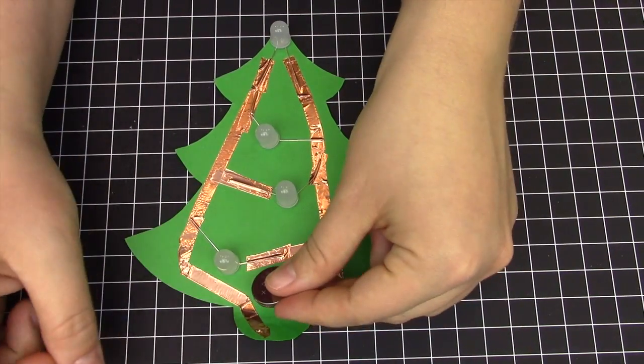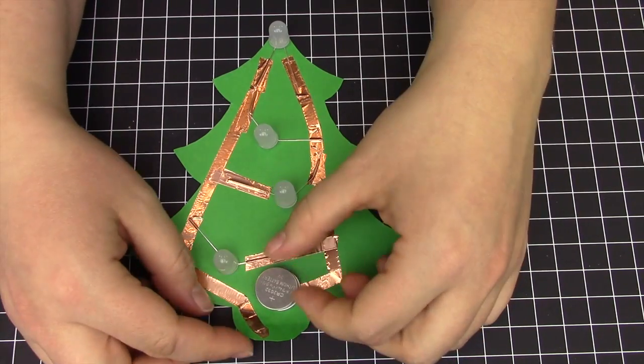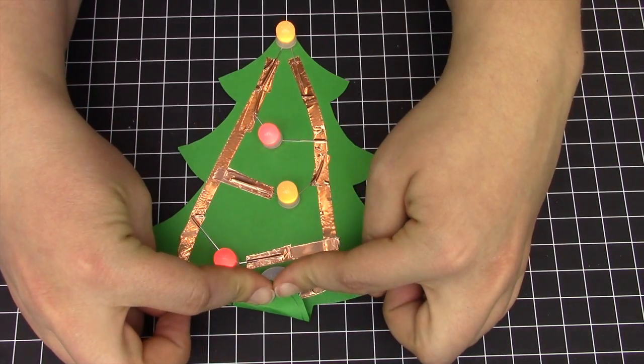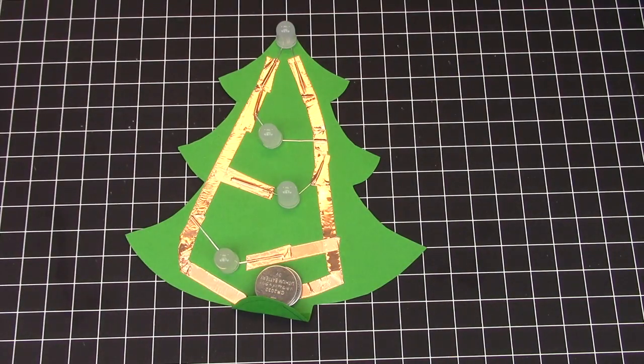Next, we will add our batteries. Take the two 2032 batteries and stack them on top of each other, positive side up. Then bend the battery tab over the top. If your circuit is correct, all of the LEDs will light.